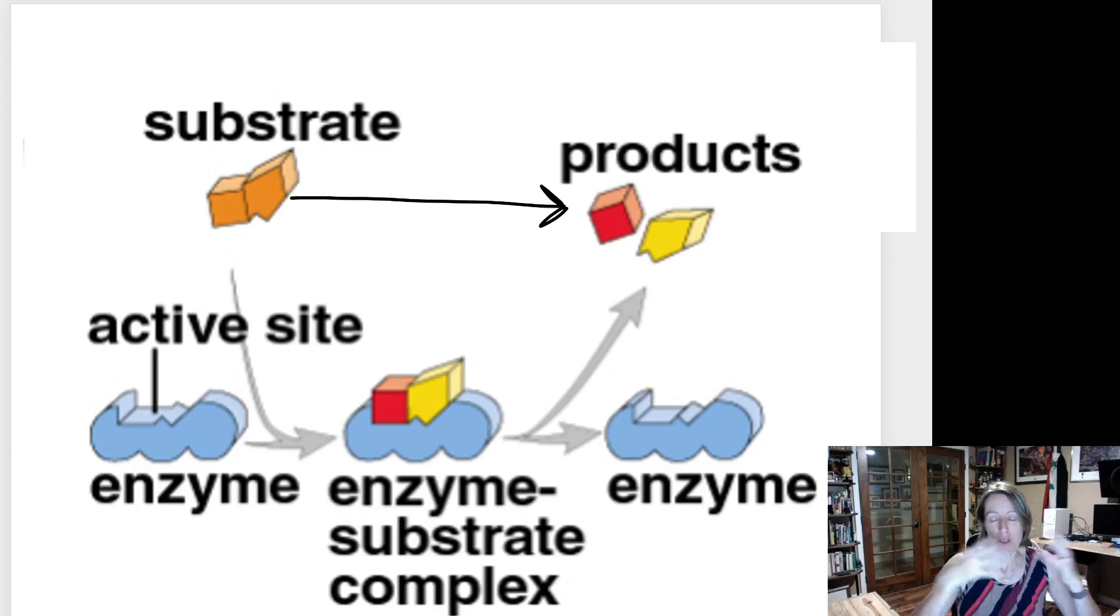You've got to imagine in a cell at 37 degrees Celsius in your body, all these molecules are moving around randomly and colliding randomly. Here's my enzyme with this active site, here's my substrate - they might collide like this or like that, but they have to collide perfectly so they can slot together and then the reaction can happen.